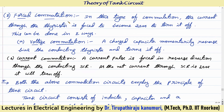The second method is forced commutation. The name itself indicates we are forcing it to commutate — that means using some artificial technique, we are going to force the current to become zero and commutate. The current through the thyristor is forced to become zero to turn it off. This can be done in two ways. The first one is voltage commutation, where a charged capacitor momentarily reverse biases the conducting thyristor and thereby turns it off — that's why it is called voltage commutation.